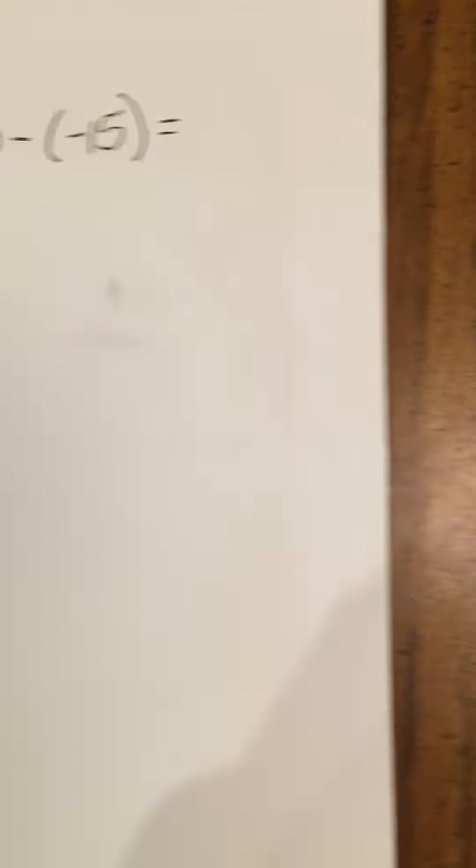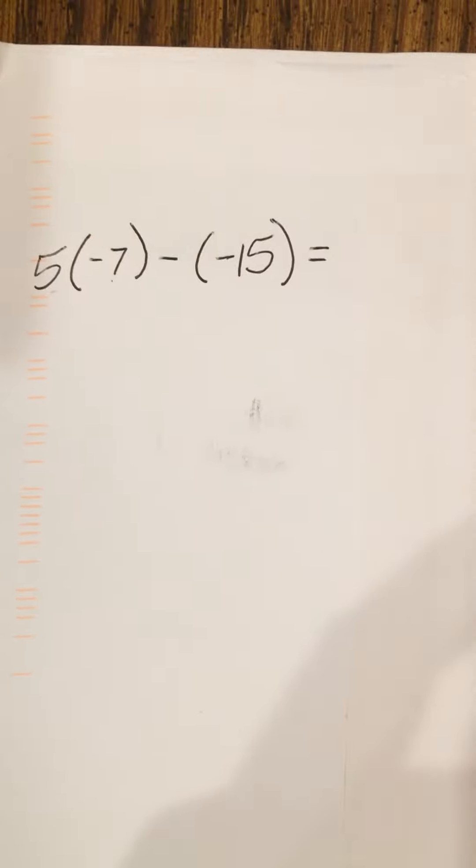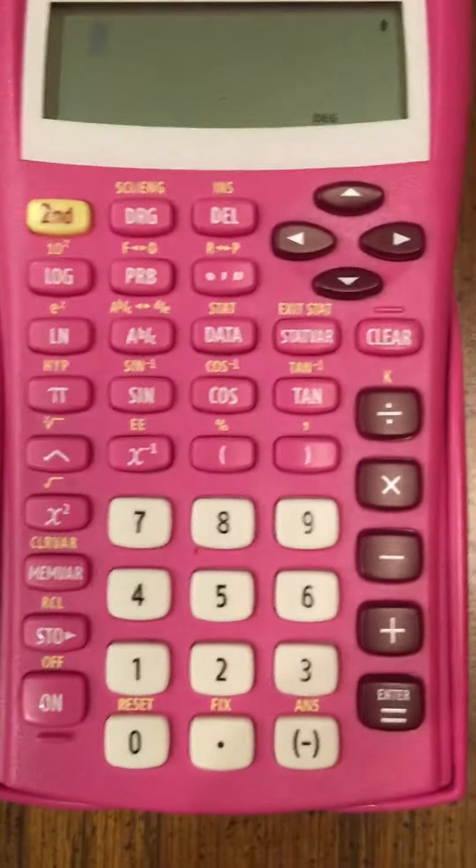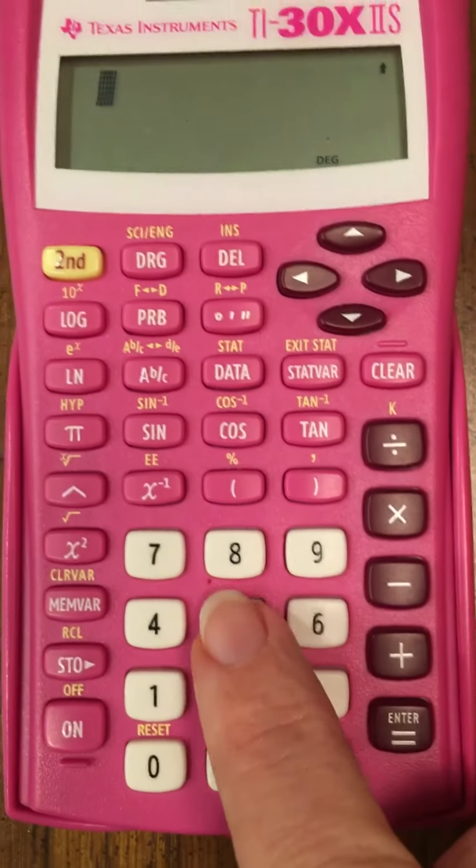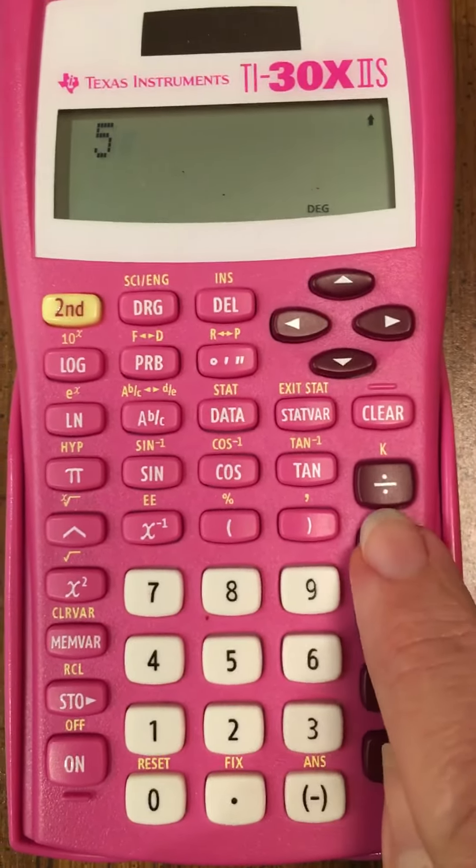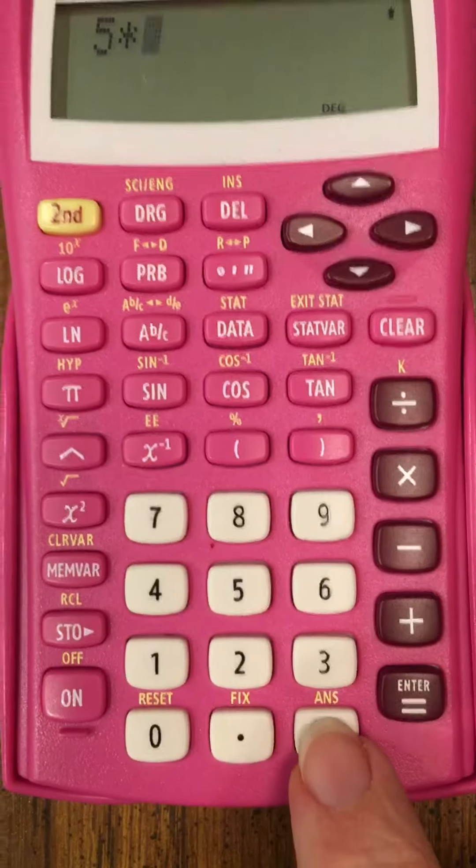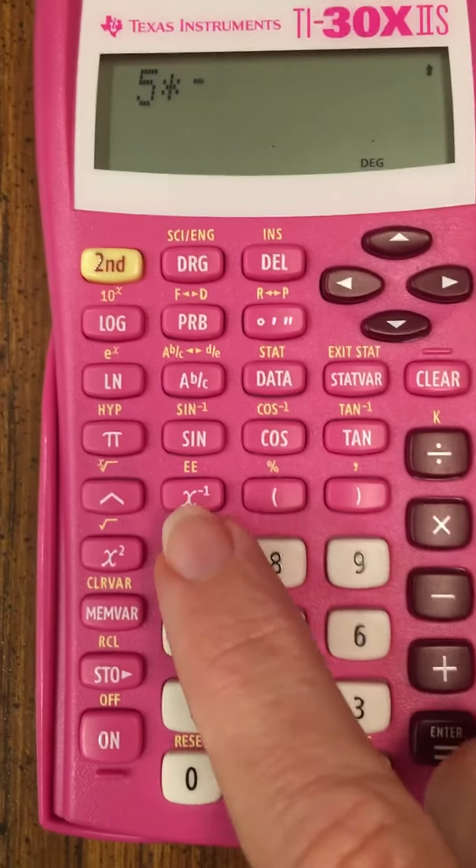All right, so let's put this in the calculator. 5 times negative 7. Okay, so I'm going to hit 5 times negative, got to hit the negative, 7.